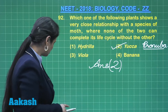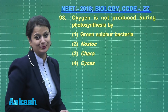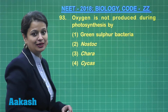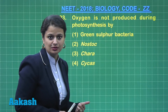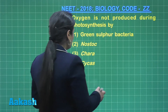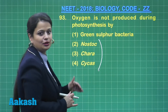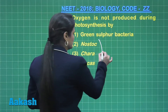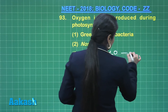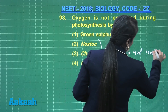Moving on to the next question, that is 93 — a very important question. Oxygen is not produced during photosynthesis by... So the question is asking about organisms which perform anoxygenic photosynthesis. In these three options, during photosynthesis there is splitting of water. Splitting of water releases hydrogen ions, electrons, and oxygen.